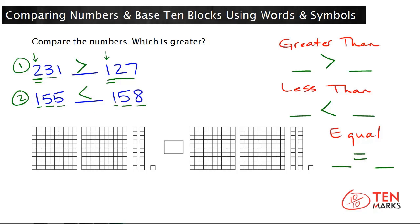For the last example, the numbers are written in base-10 blocks. Let's identify what numbers are shown. Remember, a flat like this represents 100. Each side has one, two flats, so both numbers have the same amount of hundreds. Counting the tens in blue: the number on the left has two tens, and the number on the right also has two tens. So now we need to compare the ones.